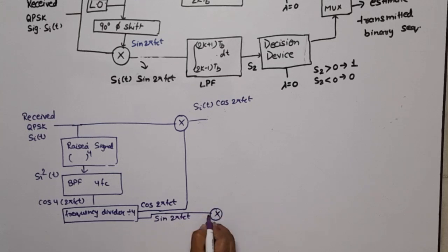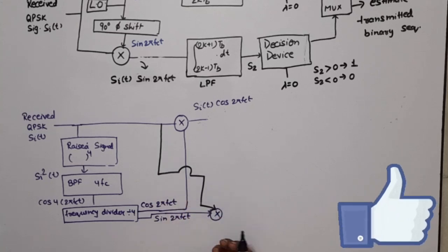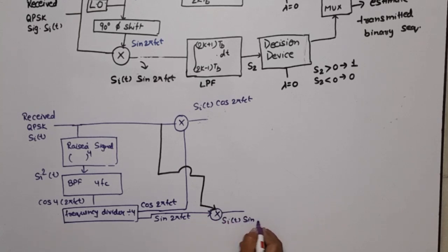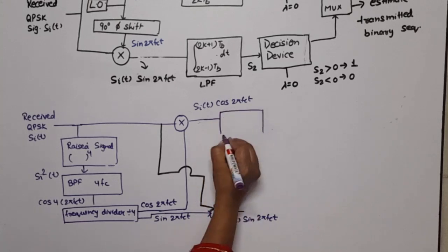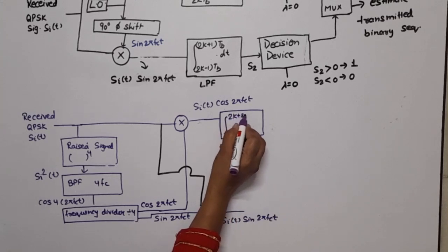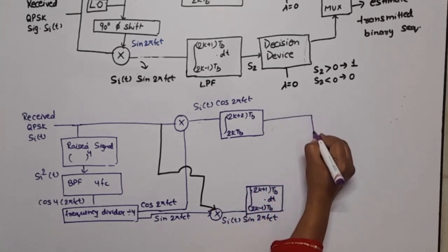The second input of this product modulator is the received signal. The output will be si(t) sin(2π fc t). This is applied to a low pass filter with range 2k tb to 2k plus 2 tb. The other signal is also applied to a low pass filter or integrator from 2k minus 1 tb to 2k plus 1 tb.